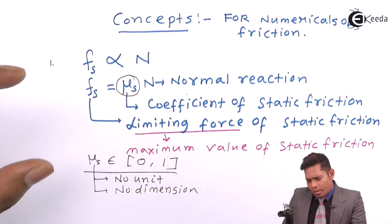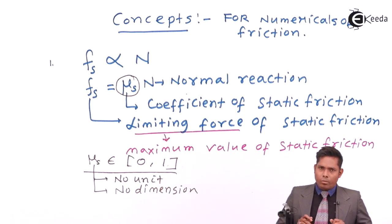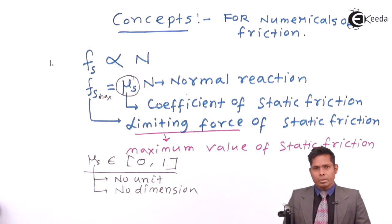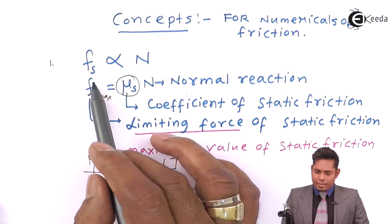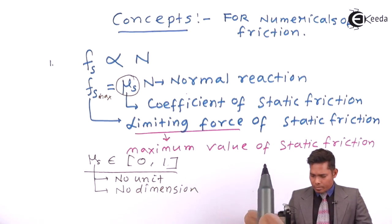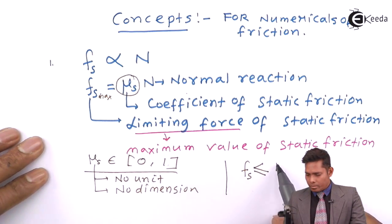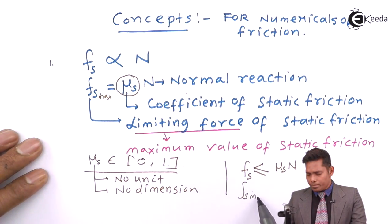Now let us apply the equation Fs = mu s × N to numericals. Our equation is: Fs, or FL (limiting friction), or Fs maximum equals mu s into N. Note that you cannot always write Fs maximum equals mu s × N — sometimes the static friction is less than this maximum value. The equality sign holds only when friction is at its maximum.